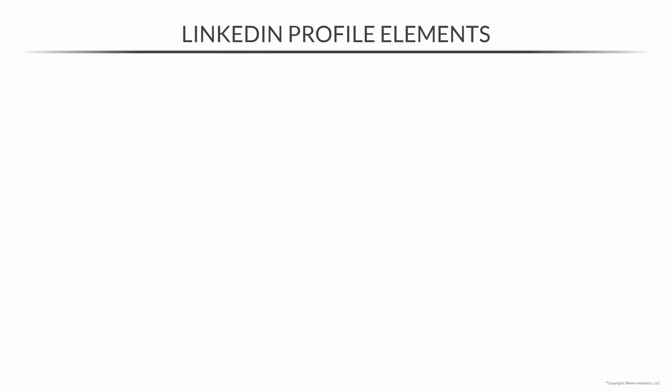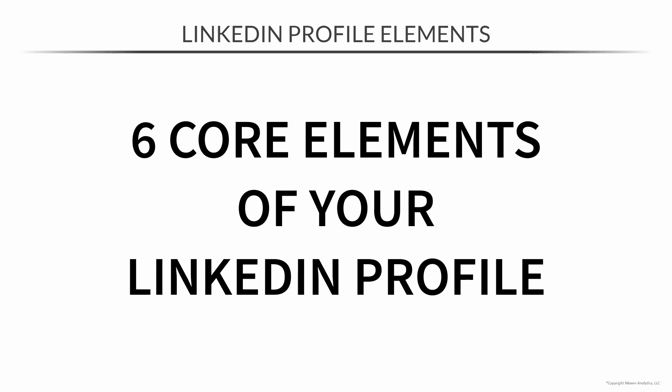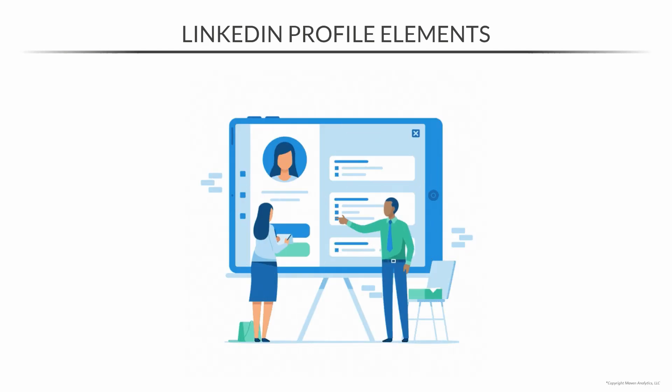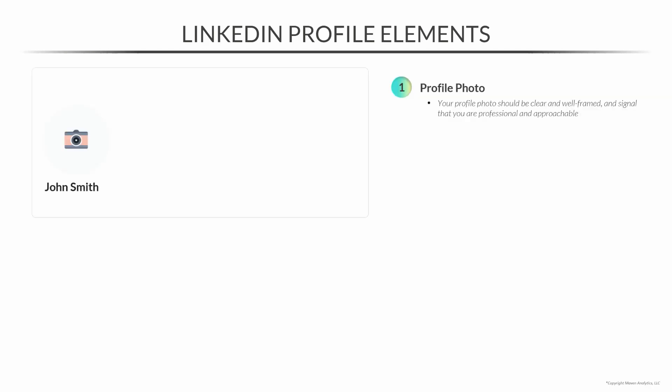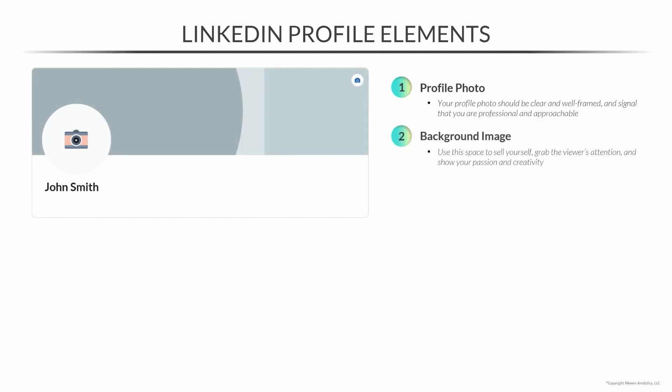Up next, I'd like to take some time and introduce you to the six core elements of the LinkedIn profile that we're going to focus on building out. Up first, you're going to want to make sure that you add a profile picture that's clear and well framed, meaning that you can clearly see your face. Additionally, your picture should signal that you're professional and approachable. Next, your background image is an often overlooked area, but it's a great space to sell yourself, grab the viewer's attention, and really show your passion and creativity.